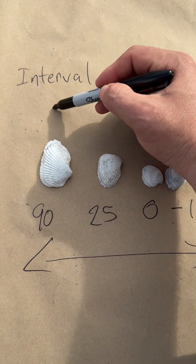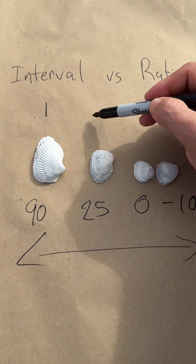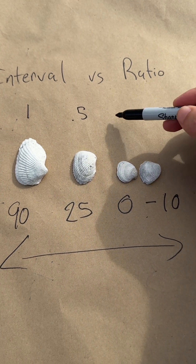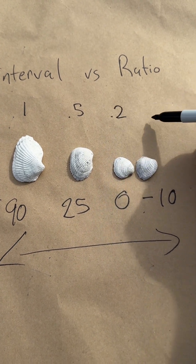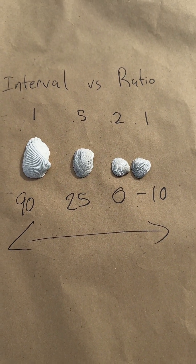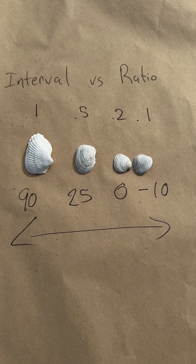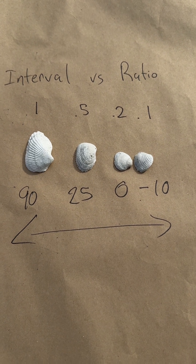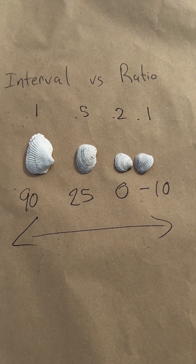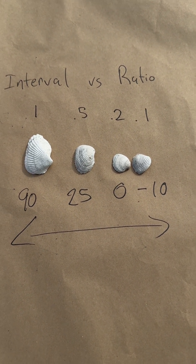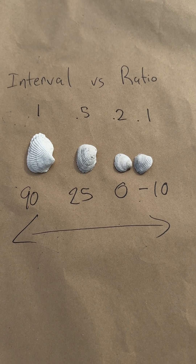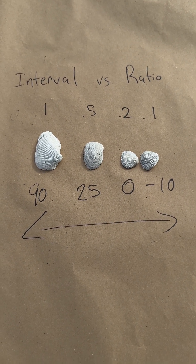This one could be one pound, this one 0.5, and this one 0.2, and this one 0.1. But none of these shells are ever going to be zero weight. That means that these shells cannot ever be at zero, otherwise they wouldn't exist. This is ratio data.